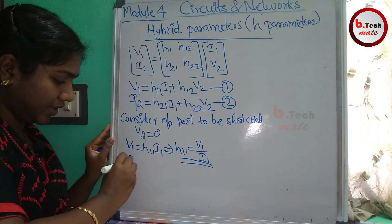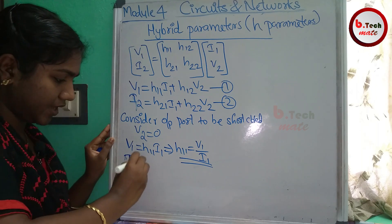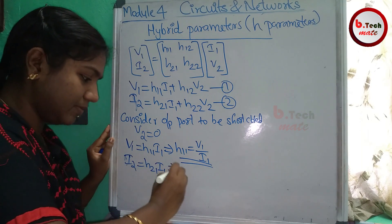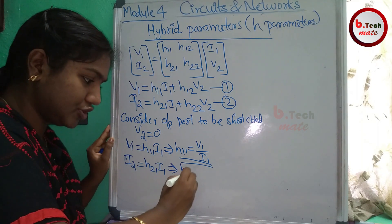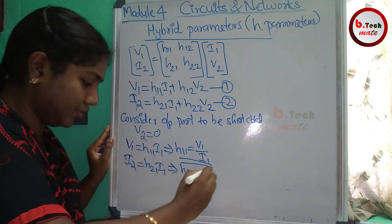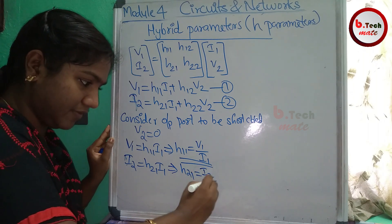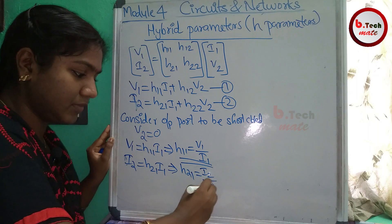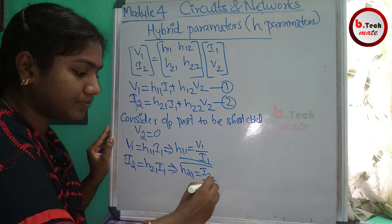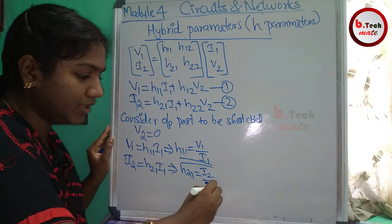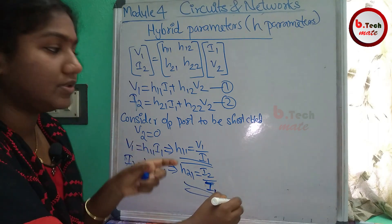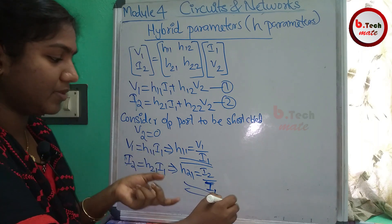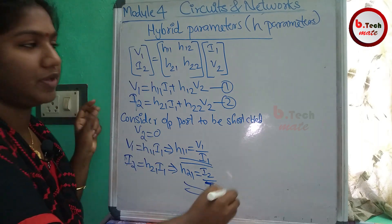Now, I2 is equal to H21·I1. This implies H21 is equal to I2 by I1. When the output is short circuit, we have derived two parameters: H11 and H21.